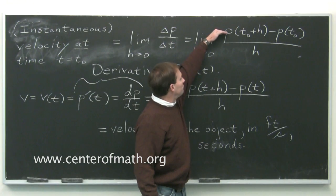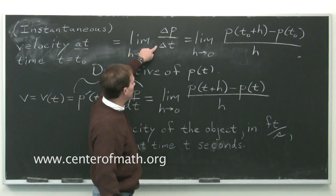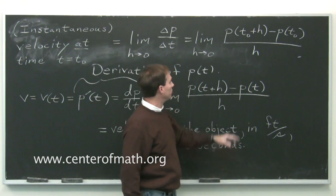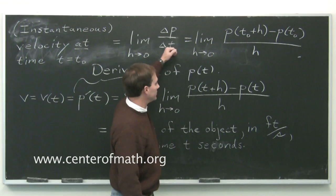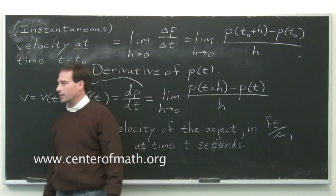The units on this, it's the units of p, the units of p divided by the units of t. So if I started with p in feet and t in seconds, then this velocity would come out in feet per second.